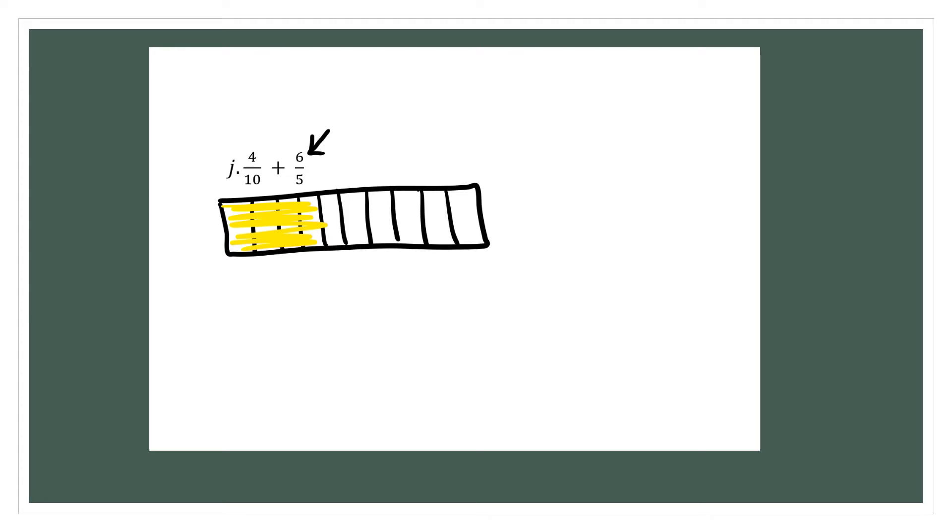So I know that I have one whole. And if we're working with fifths then 5 fifths make a whole. So I'm going to make a tape diagram with 5 fifths first. And I know that all 5 fifths have to be colored in because we actually have 6 fifths. So there's 5 fifths.